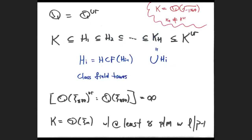A few quick comments on maximal unramified extensions. The maximal unramified extension could be finite or trivial — for Q there are no unramified extensions at all. On the other hand, the maximal unramified extension can be infinite. There's this notion of a class field tower: starting with K, you take the Hilbert class field of K, then the Hilbert class field of the Hilbert class field, iterate this process, and take the union.